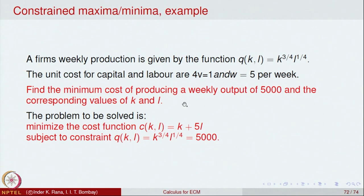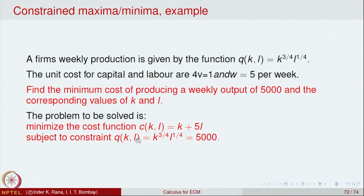We want to minimise the cost function C(K, L) = 1·K + 5·L subject to the constraint that the production function equals 5000: K^(3/4) · L^(1/4) = 5000. This is the constraint we must obey, and C(K, L) is the function to minimise.